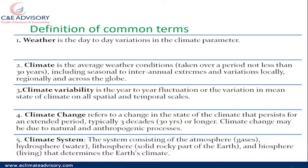All this information is contained in what we call the climate system. The climate system consists of the atmosphere — which involves gases — the hydrosphere, which consists of water, the lithosphere, which is solid rock or part of the earth, and the biosphere, which includes all living things: wildlife, animals, plants, insects, reptiles, etc. These components together determine the earth's climate. When we talk about climate change, we mean that we are affecting the climate system by emitting gases that change the earth's climate.